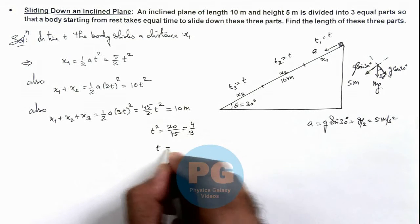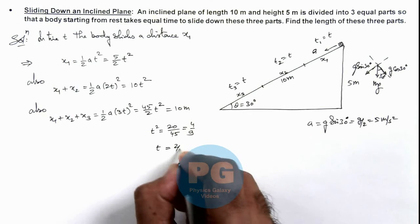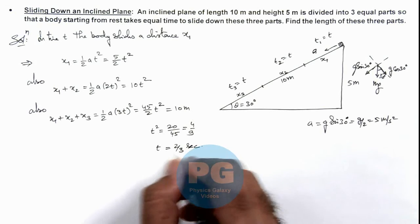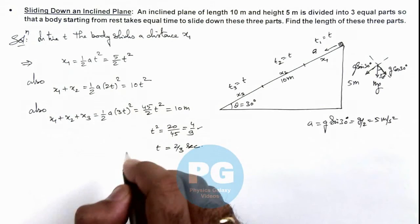The value of t we are getting is, if we take the square root of this, this is 2 by 3 seconds. So if we take time as 2 by 3 seconds or directly if we use t squared as 4 by 9, we can directly calculate the values of these lengths.